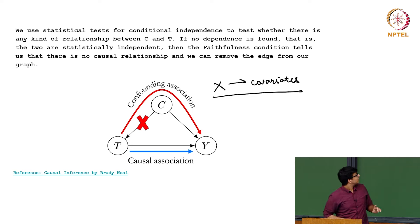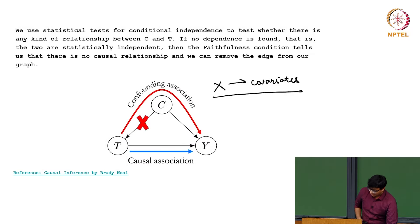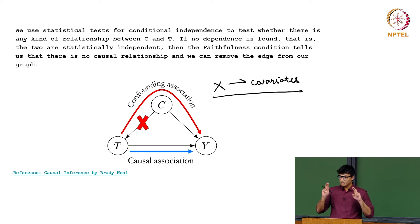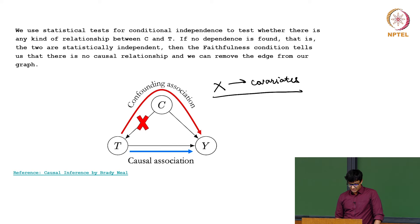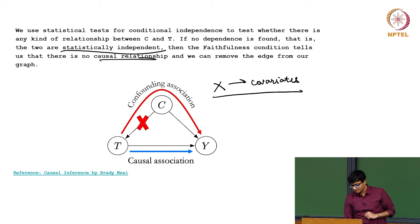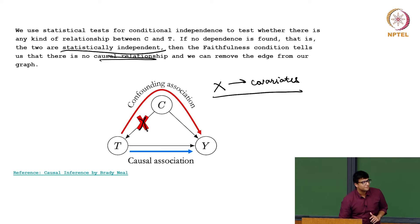By doing probabilistic invariance tests, we can find out if T is dependent on C or not. If no dependence is found — if T and C are statistically independent — then the faithfulness condition tells us there is no causal relationship, and we can remove this edge. Once we remove this edge, making changes to the treatment variable will affect the outcome variable and we can say this is the reason it happened, because our covariates are staying constant.